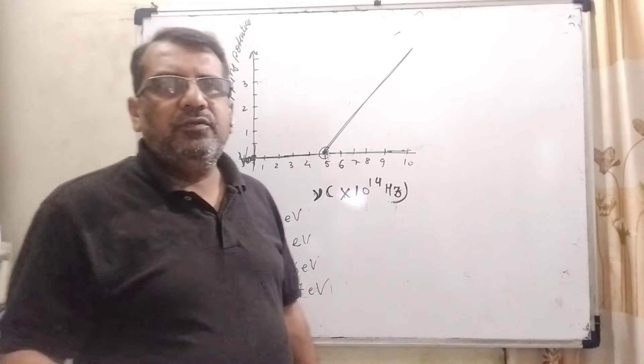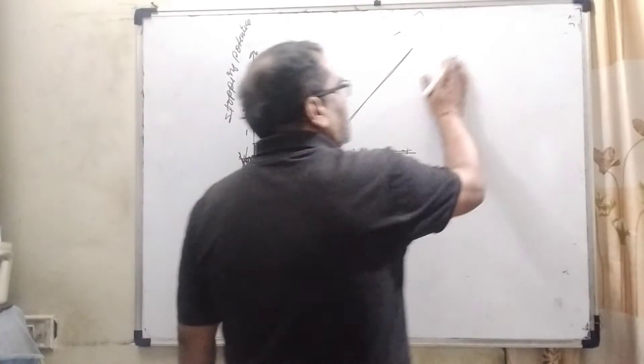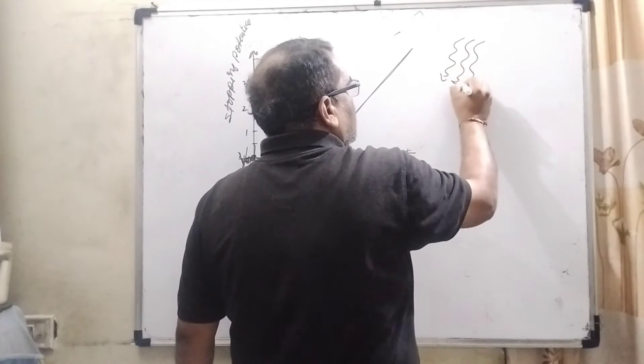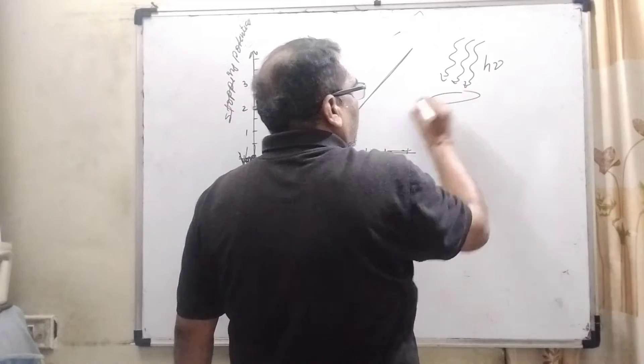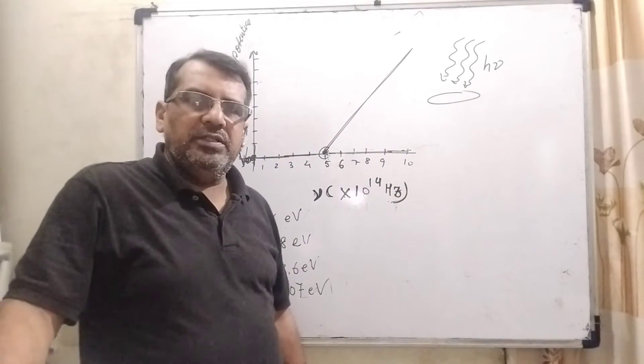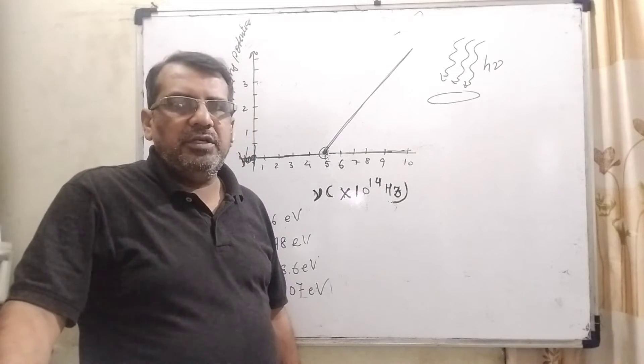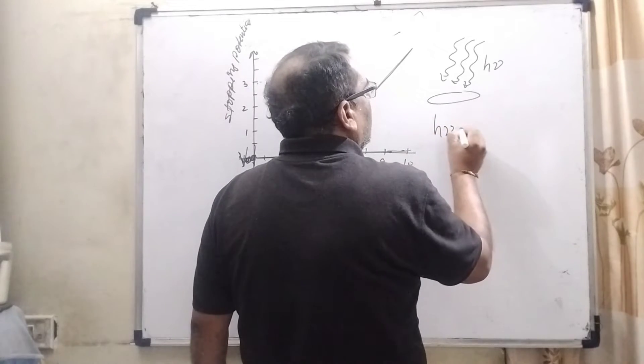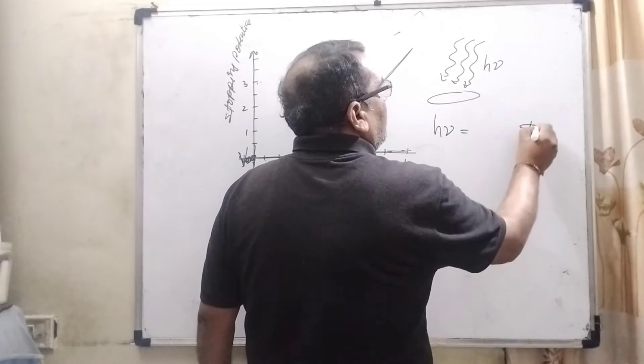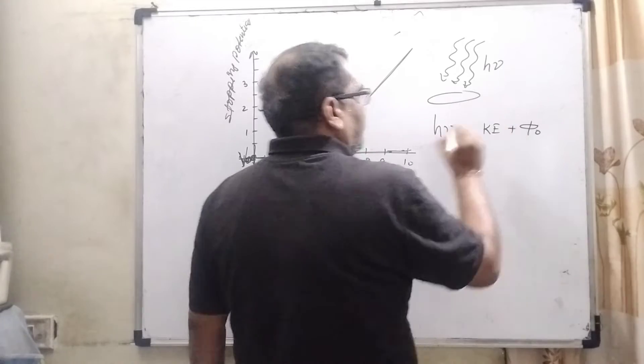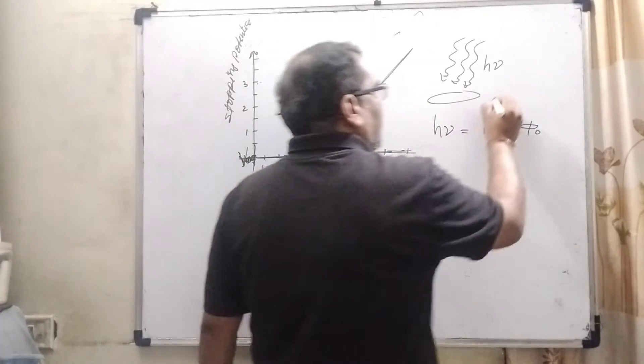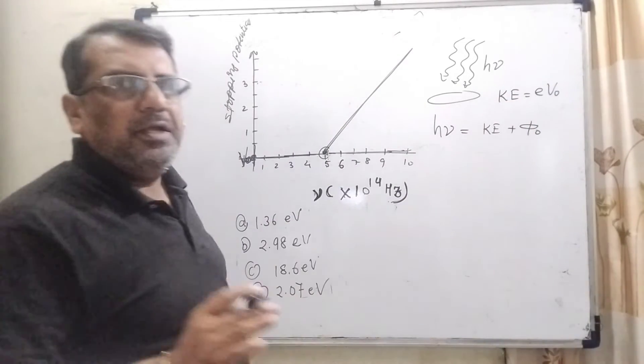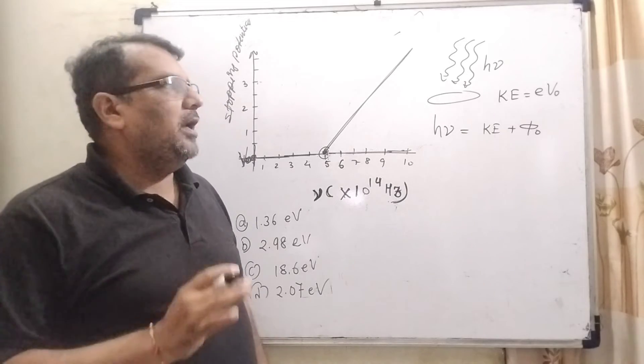As per Einstein's photoelectric equation, what is the Einstein photoelectric equation? Total incident energy or photon energy, when on metal, it is utilized in two ways: first work function, and then kinetic energy. So here, total energy of photon is equal to work function plus kinetic energy. In the place of kinetic energy, we can substitute here eV0, means kinetic energy is equal to potential energy when energy is conserved.